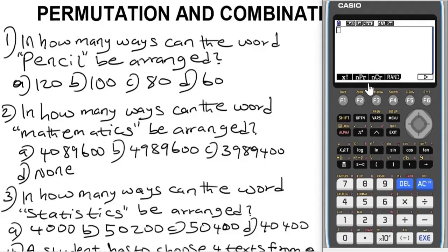Now let's begin with question 1. It says: in how many ways can the word 'pencil' be arranged? The word pencil is made up of five letters, and the letters that make up the word pencil are distinct — there is no duplication of any letter. Now, how do you differentiate problems that are permutation from problems that are combination? Permutation deals with distinct arrangement of things or items, whereas combination deals with selection or choice of items or things.